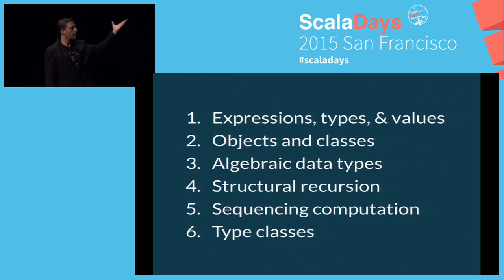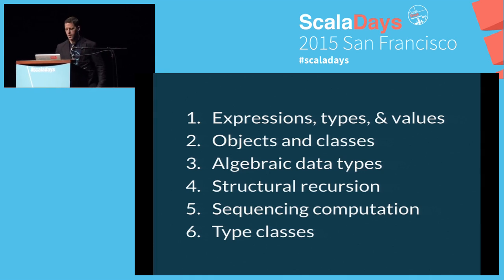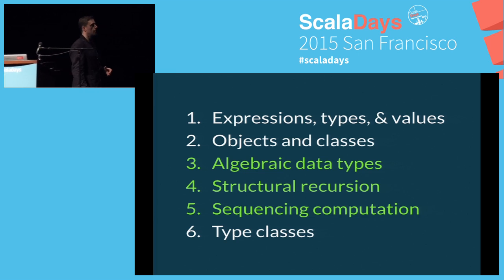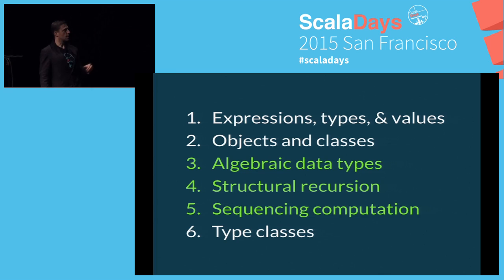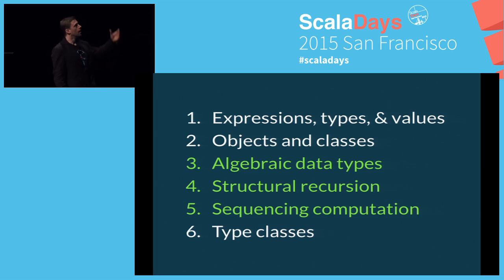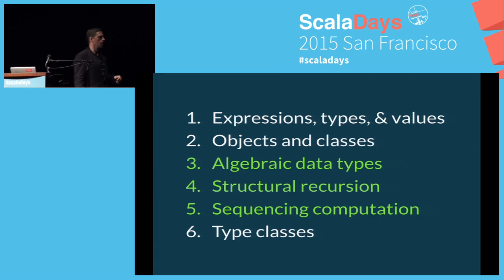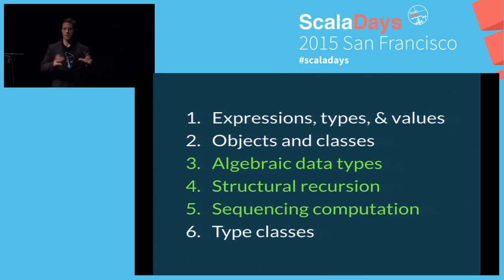Now, these names may not mean anything to you. I've used some names from academic literature. But I'll be showing these patterns later on in the talk, and hopefully you'll see some of them are familiar, though you might not know the names for them. In this talk I want to focus on three: Algebraic Data Types, Structural Recursion, and Sequencing Computation. I think about 90% of idiomatic Scala code is using these patterns.